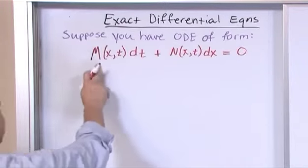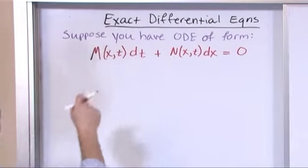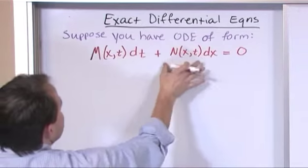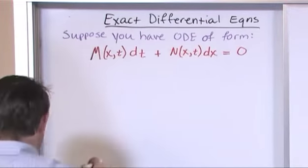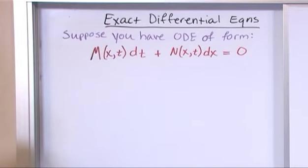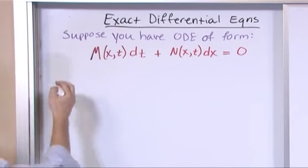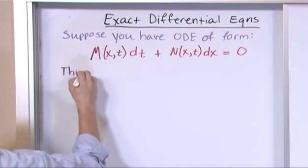So the reason we use M and N is because in a minute I'm going to reference M and N: M being the thing in front of dt and N being the thing in front of the dx like that. So suppose you have a differential equation of that form, this ordinary differential equation.